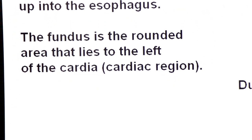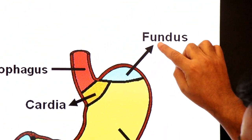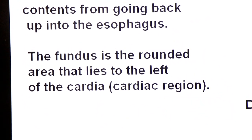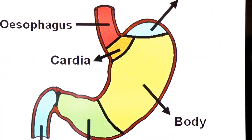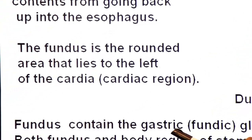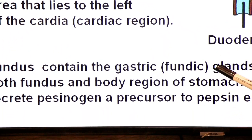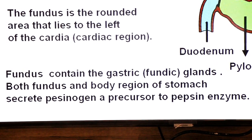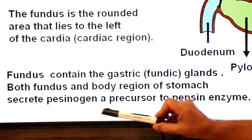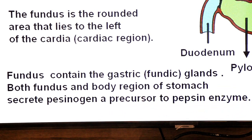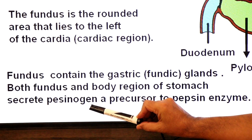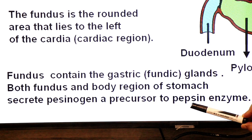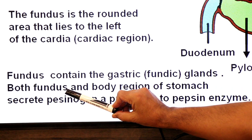The fundus is the rounded area that lies to the left of the cardiac part. The fundus contains gastric glands, also called fundic gastric glands. Yehaan se ek inactive enzyme produce hota hai — pepsinogen — jo phir convert ho jata hai active pepsin mein. Both the fundus and the body region of the stomach secrete pepsinogen, the inactive enzyme and precursor to pepsin.